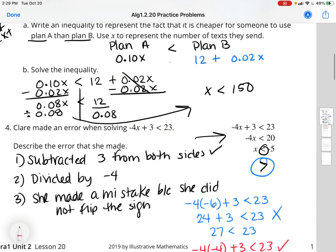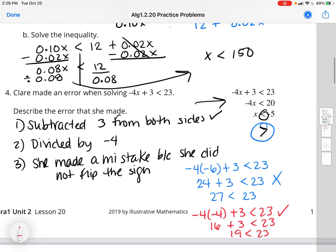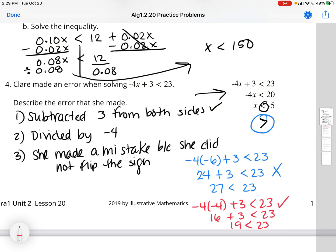Question four. Now we're looking at error analysis. Claire made an error when she was solving this: negative 4x plus 3 is less than 23. You can see her work on the right. The first thing that she did is subtracted 3 from both sides. And then she got negative 4x is less than 20. The second thing she did was divided by negative 4. So she got x is less than negative 5. Here is where she made her mistake. She did not flip the sign. We talked about this in class. When you multiply or divide by a negative number, you want to make sure you flip the sign.